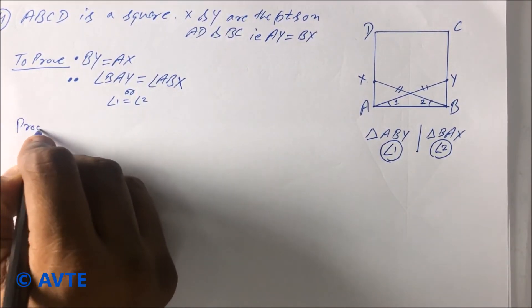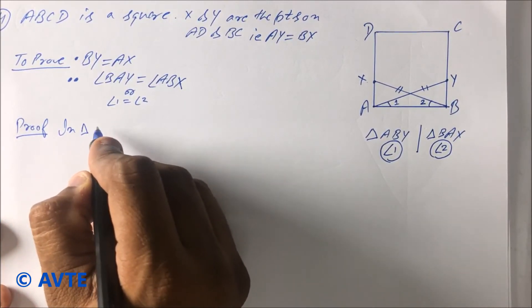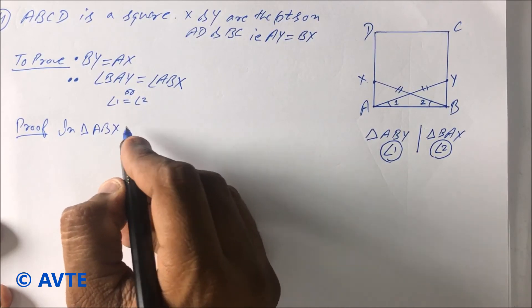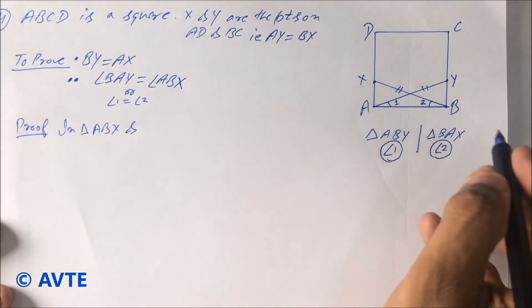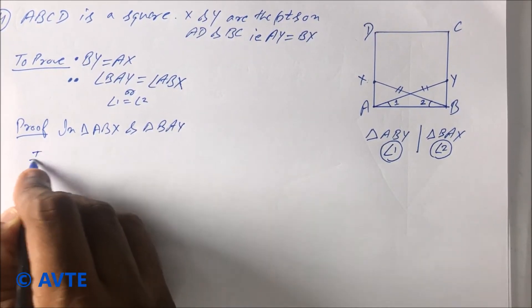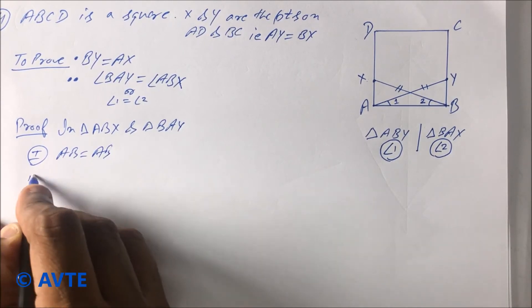Okay, so proof. As I told you, I just give you the hint and the entire solution, and you have to write down your own comments. In triangle ABX and in triangle BAY, your first AB is equal to AB, that is common.